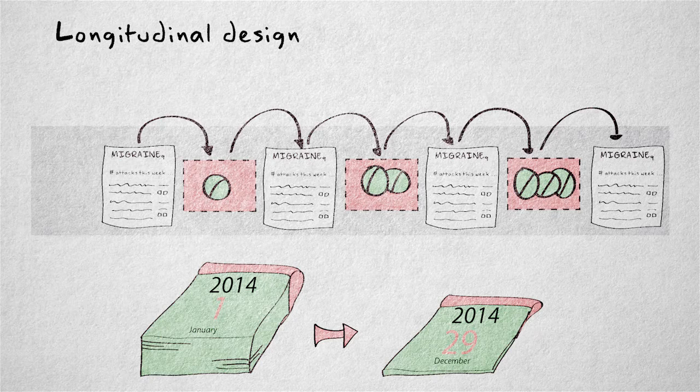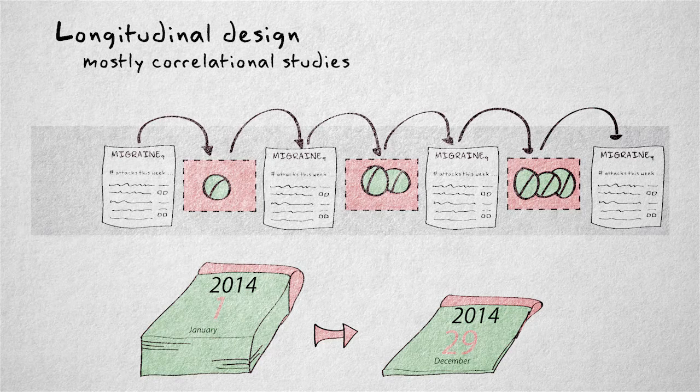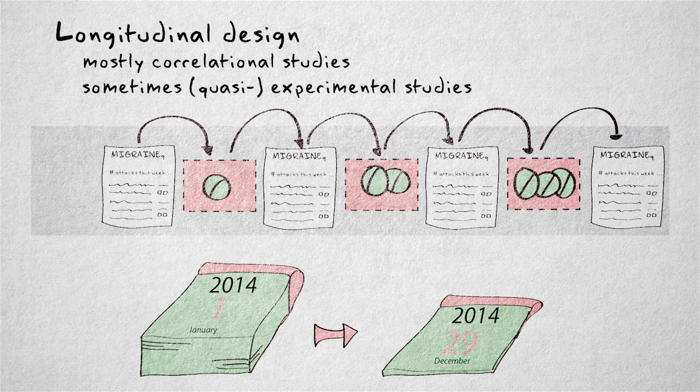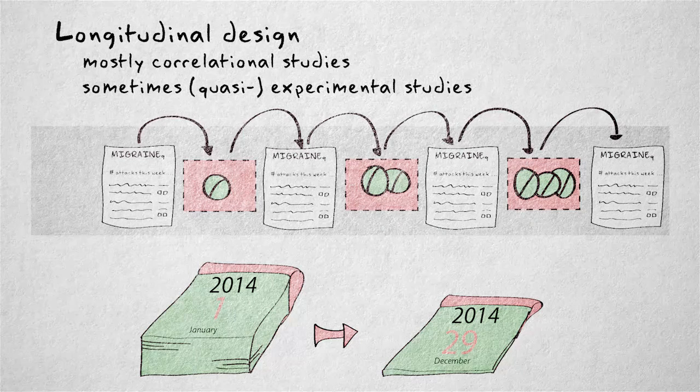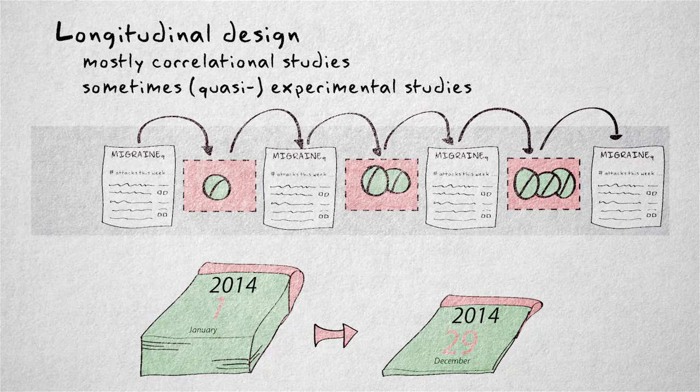The term longitudinal design usually refers to correlational studies, where no independent variables are manipulated. But the term does include experimental or quasi-experimental studies that succeed in long-term manipulation of independent variables. Such studies are rare, though.